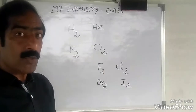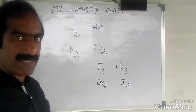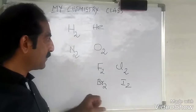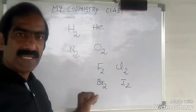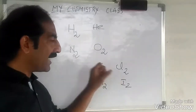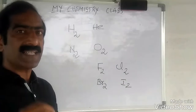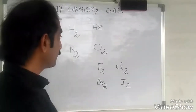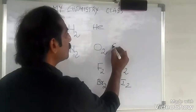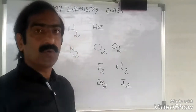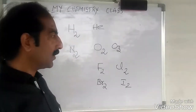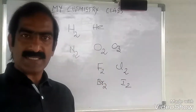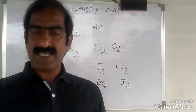Remember these elements that exist as dimers: H2, N2, O2, F2, Cl2, Br2, I2. Oxygen also exists as a trimer, that is O3. What is O3? Ozone. So an element may exist as monomer, or dimer, or trimer.